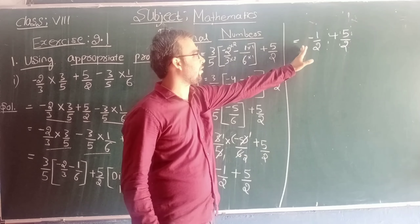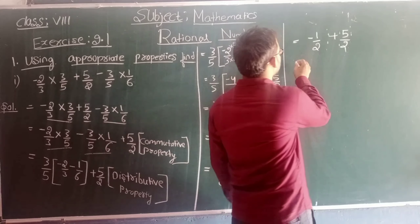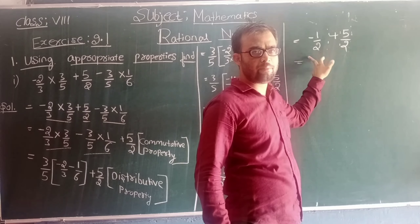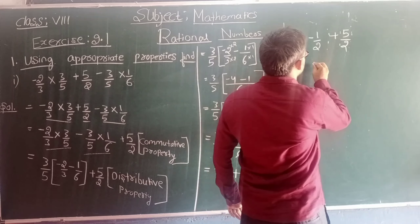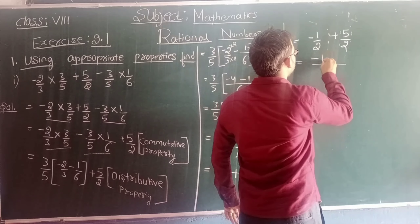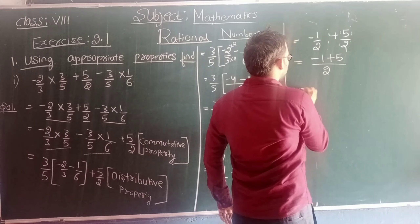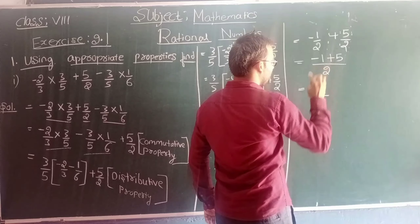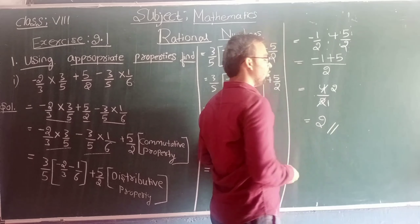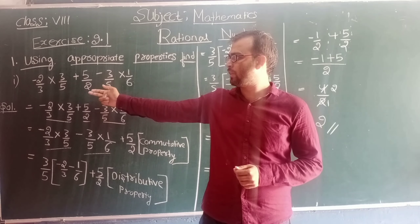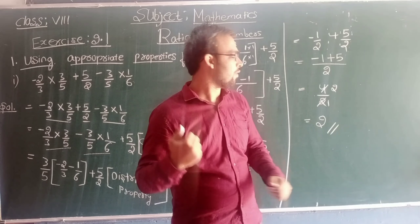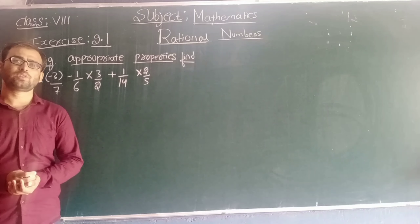Now these two numbers have the same denominator. The LCM of 2 and 2 is 2 only. So we write as it is: minus 1 plus 5. Minus 1 plus 5 is 4 by 2, and this can be cancelled — 2 ones are 2, giving us 2. So the value of the expression minus 2 by 3 into 3 by 5 plus 5 by 2 minus 3 by 5 into 1 by 6, when solved, gives the answer as 2.